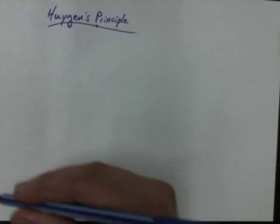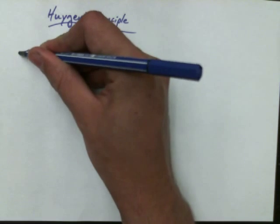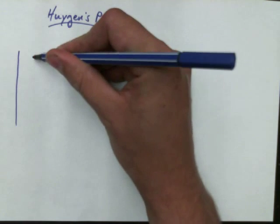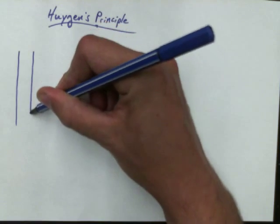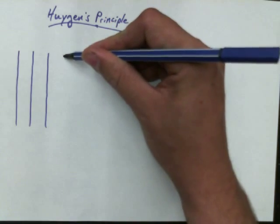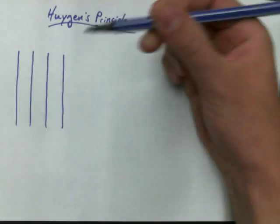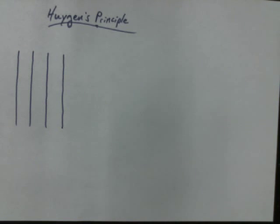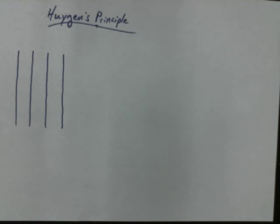Alright, so Huygens' Principle. You guys have probably noticed that if you play in the bathtub long enough, you'll notice that when you make a splash, there are ripples. And Huygens probably noticed the same thing, although whether it was in the bathtub or not, I really don't know.